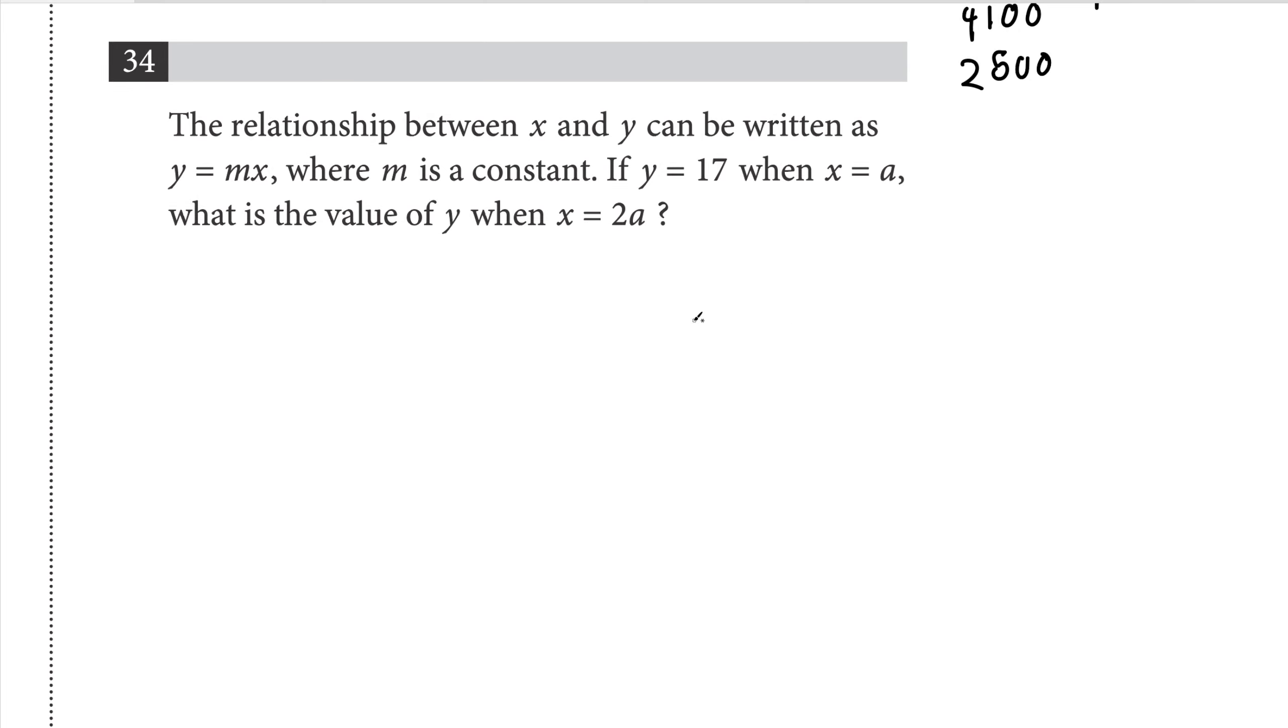The relationship between x and y can be written as y equals mx, where m is constant. If y equals 17 when x equals a, then what is the value of y when x equals 2a? Let's look at the relationship between y and x. If m is a constant, we already know that's not going to change. But we do know that if this side increases by two times, which is represented by 2a, then this is going to increase by two times also. So if y equals 17 when x equals a, when we multiply x by 2, y goes up by 2. So let's multiply y by 2 when x equals a, and 34 is our answer.